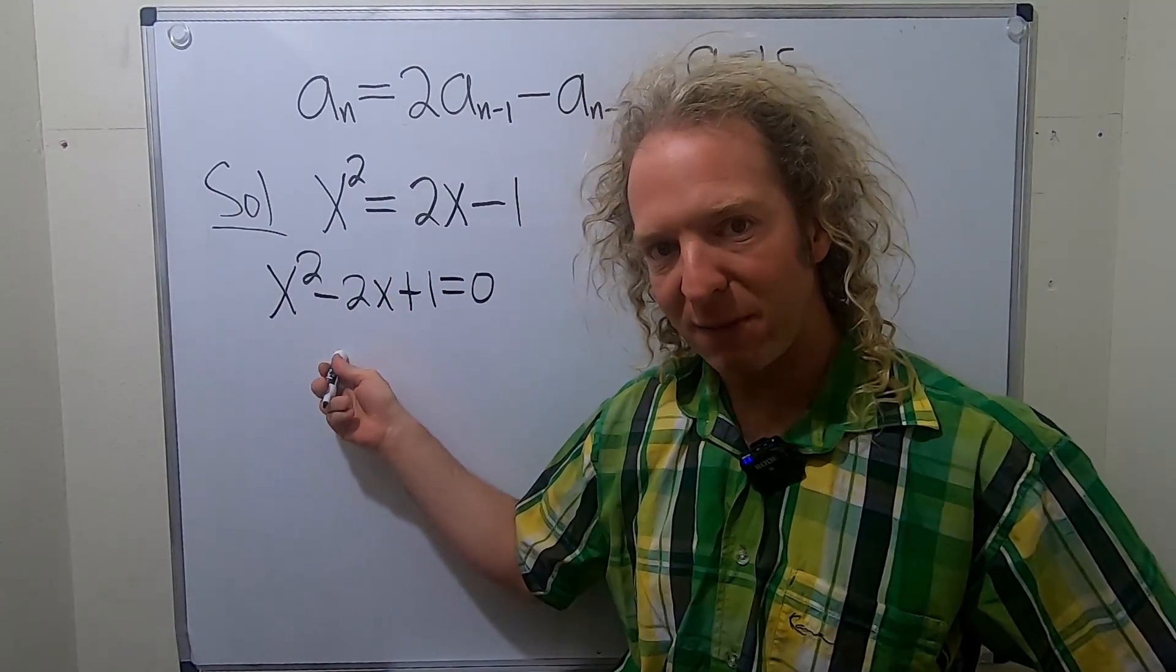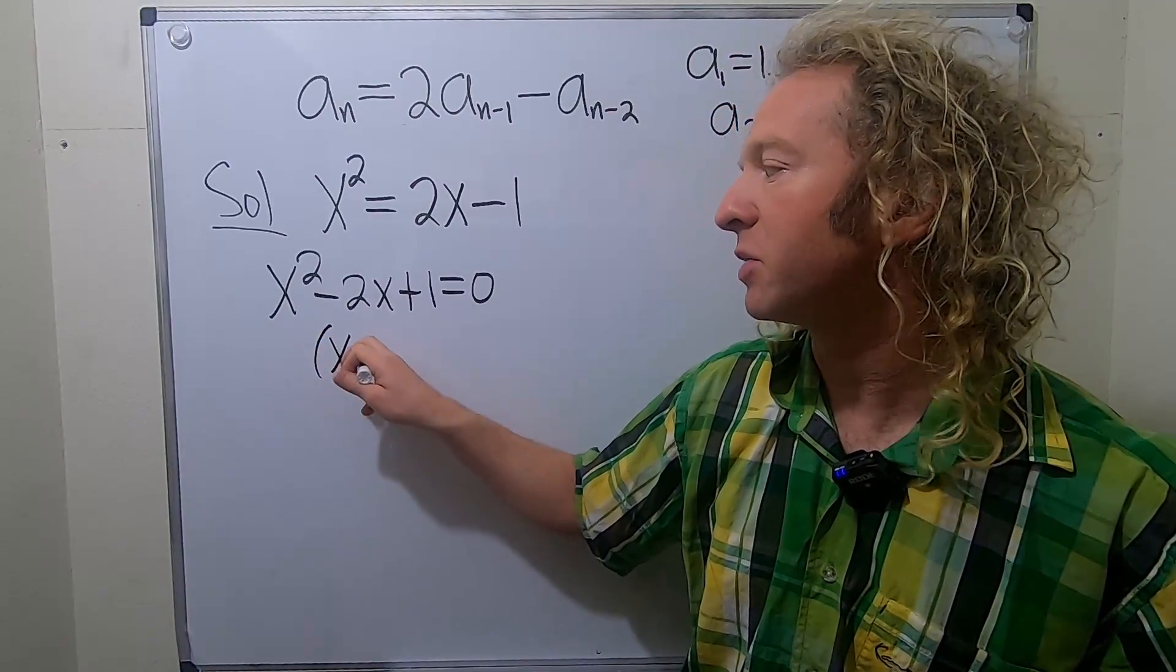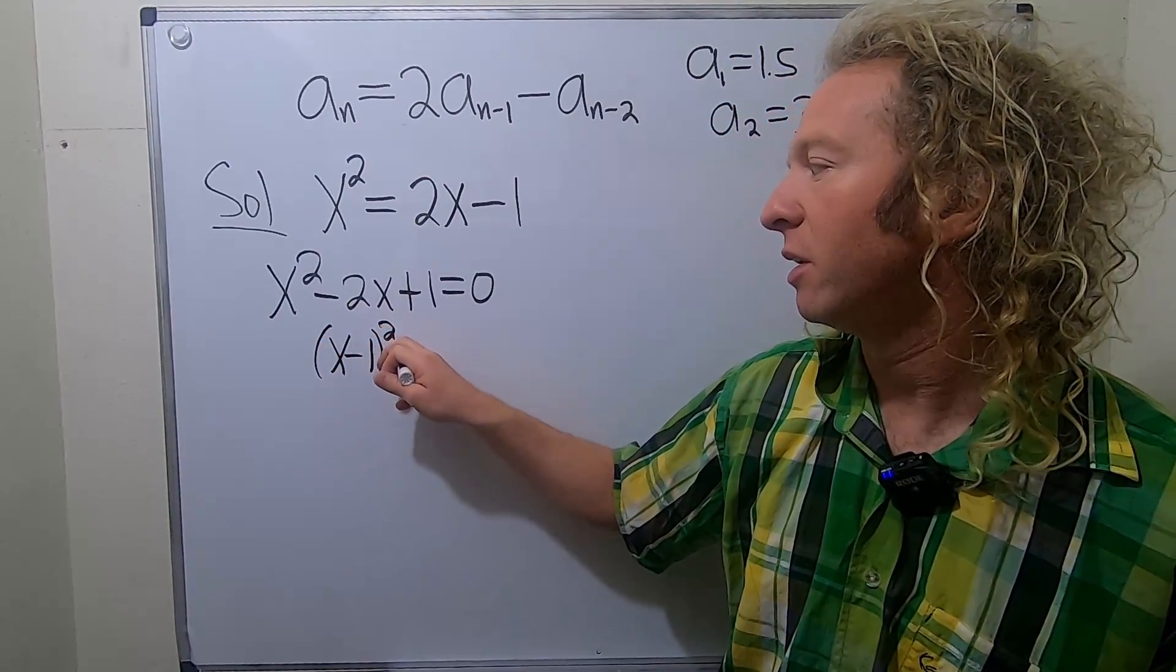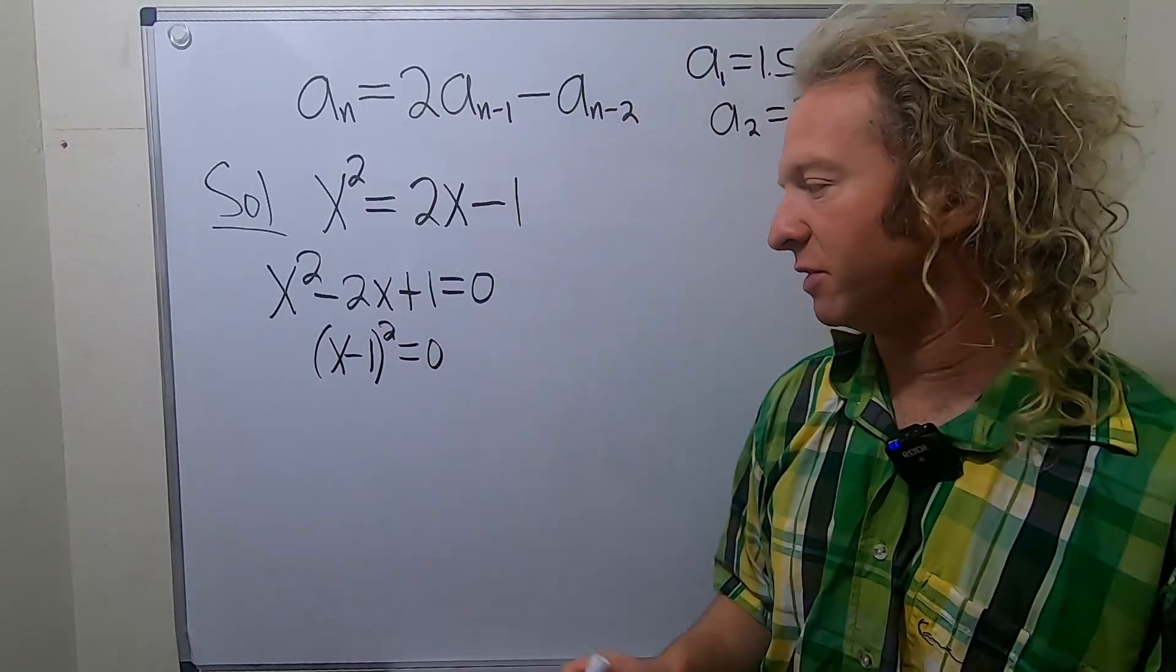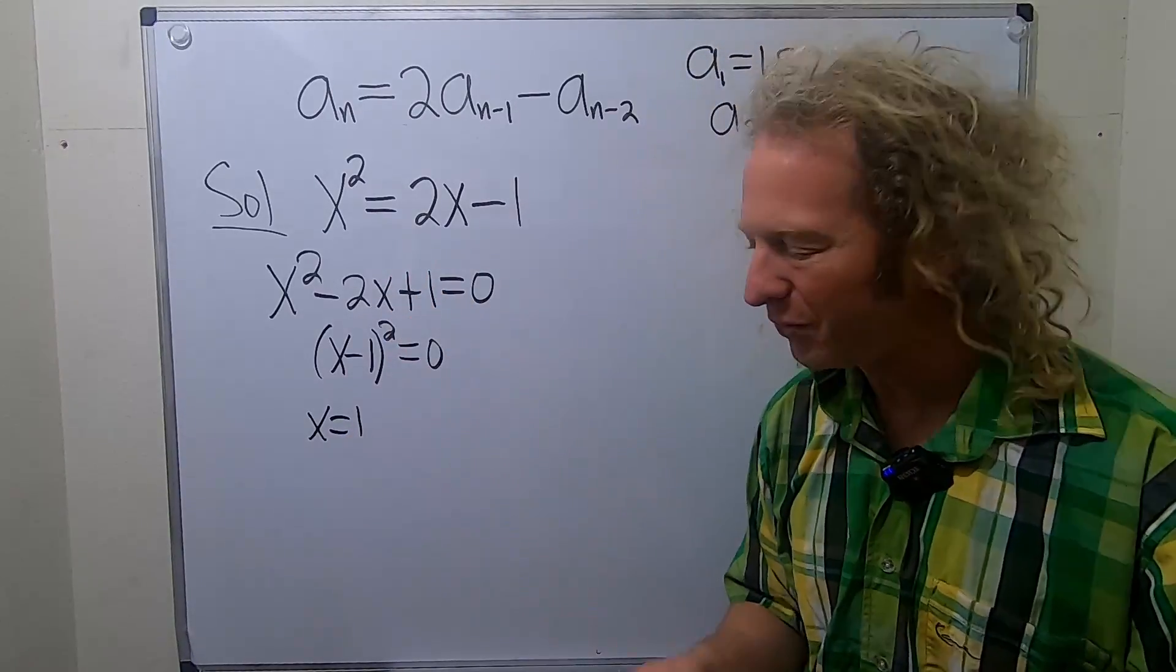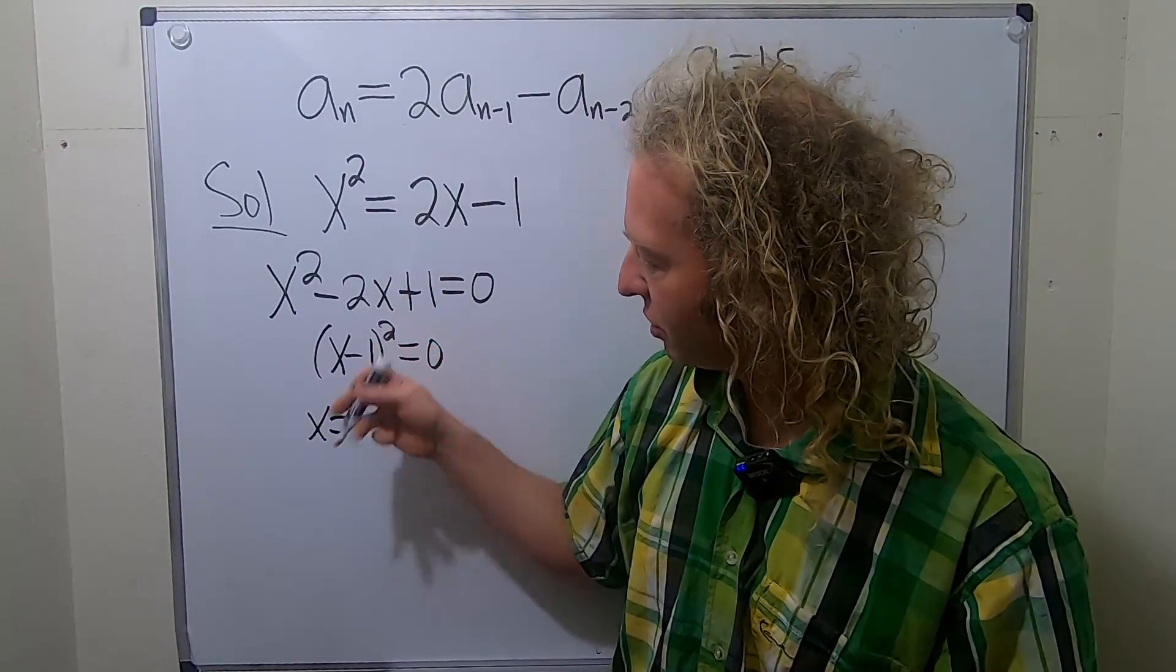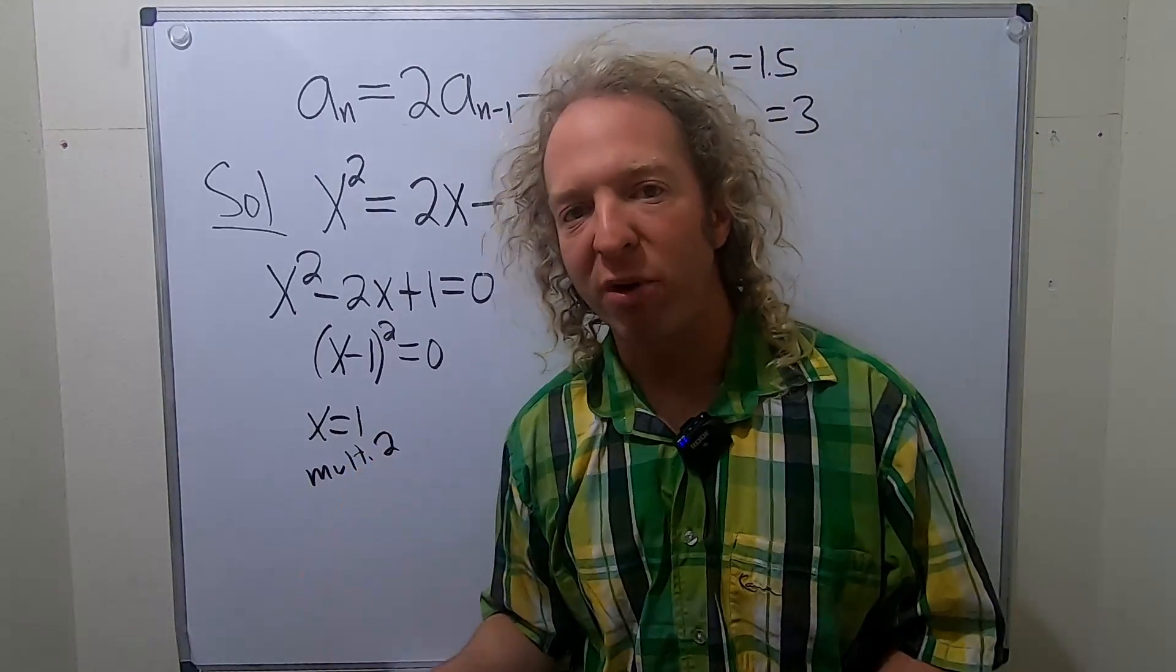This factors, right? This is (x minus 1) times (x minus 1). I'm going to write it this way: (x minus 1) squared equal to 0. And I'm doing that to emphasize the multiplicity of the zero. So x equals 1. That's our zero or our root or our solution to our equation. And the multiplicity is 2. So the multiplicity is 2. It's called the algebraic multiplicity.